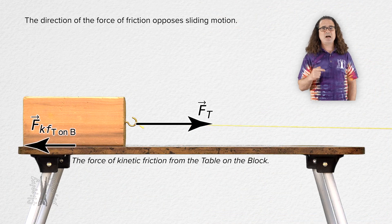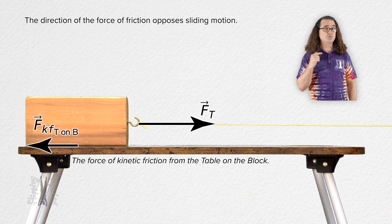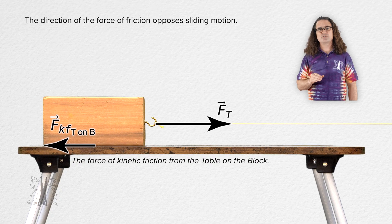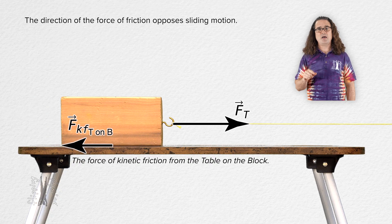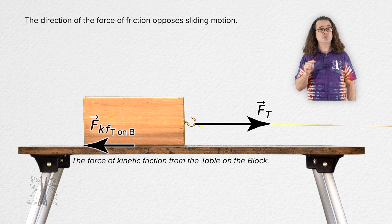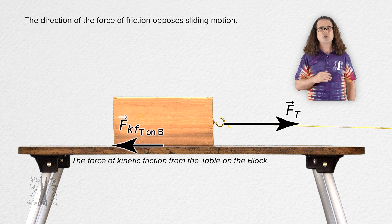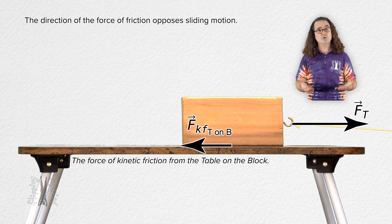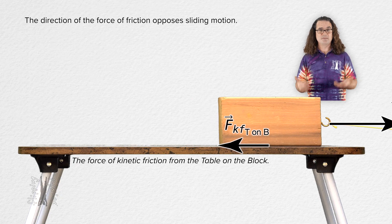If a block is sliding to the right, the force of kinetic friction from the table on the block is to the left. The force of kinetic friction opposes the sliding motion.